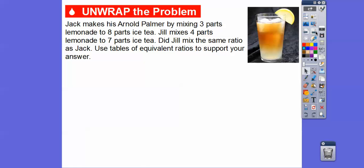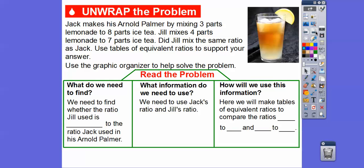So Jack makes his Arnold Palmer by mixing three parts of lemonade to eight parts of iced tea. Jill makes four parts of lemonade to seven parts of iced tea. Did Jill mix the same ratio as Jack? We're going to use tables of equivalent ratios to support our answer, using this graphic organizer to help us solve the problem.